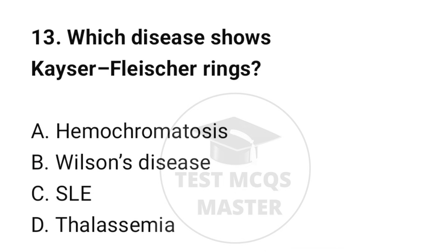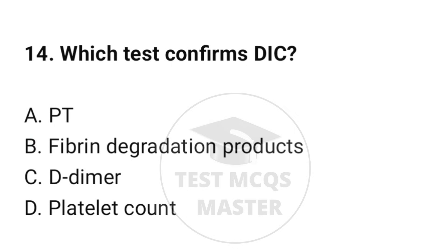Question number 13: Which disease shows Kayser-Fleischer rings? The correct option is B: Wilson's disease. Question number 14: Which test confirms DIC? The correct option is C: D-dimer.